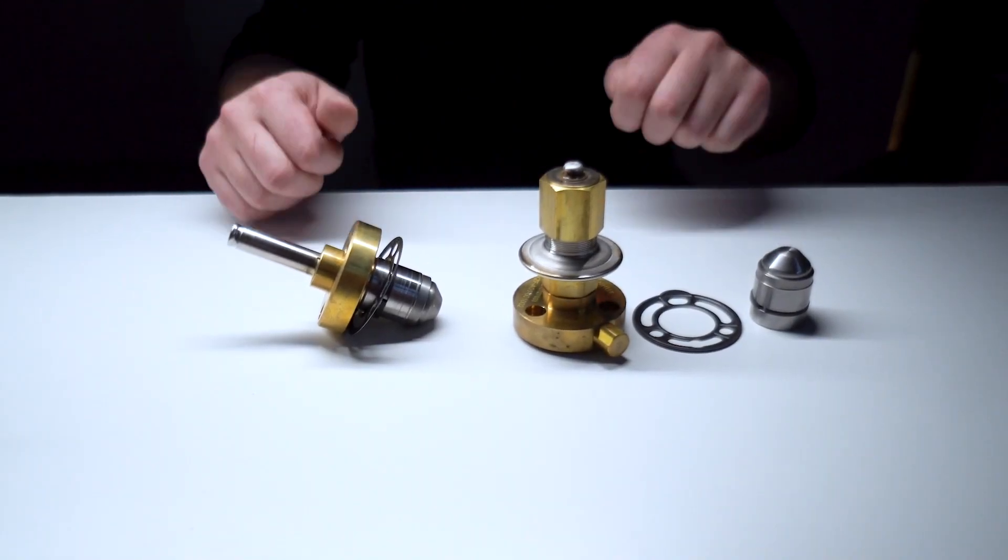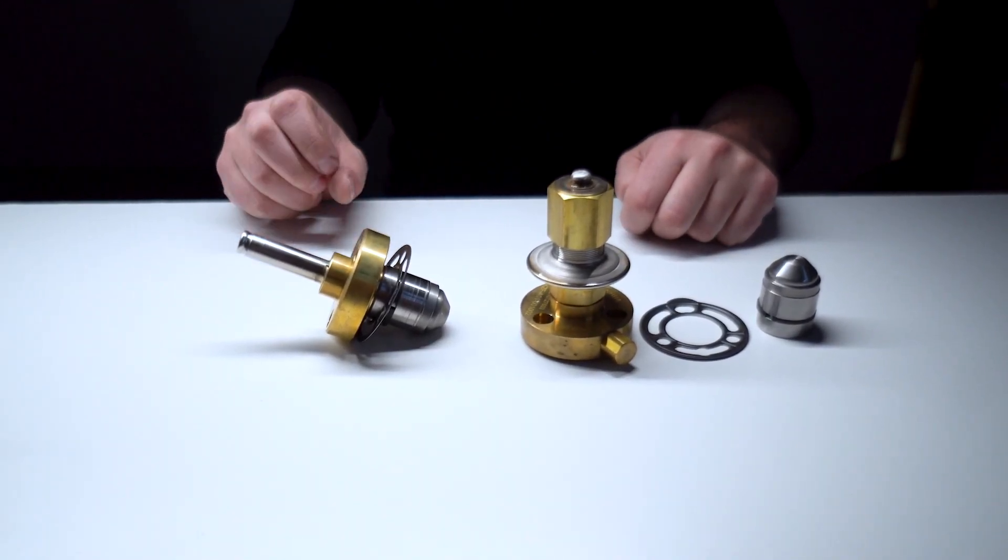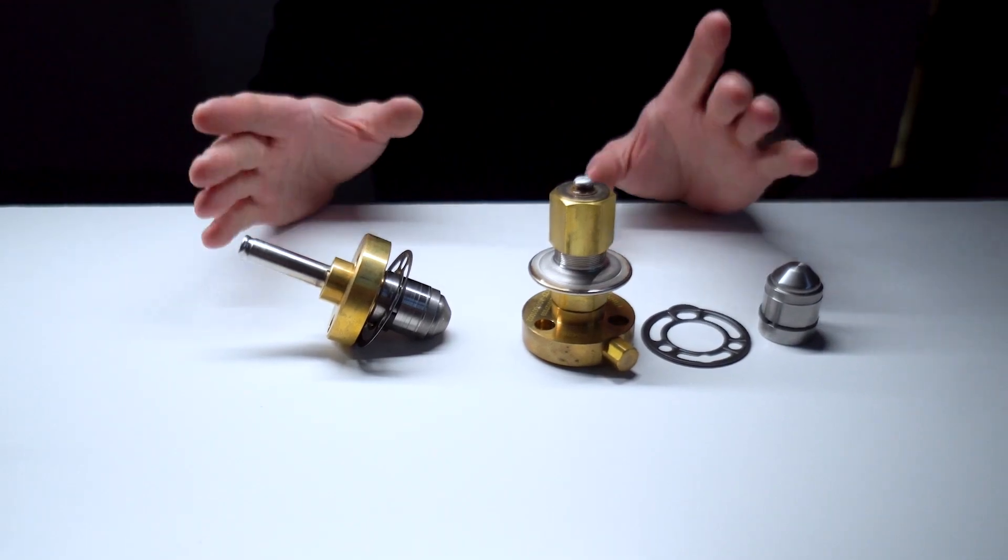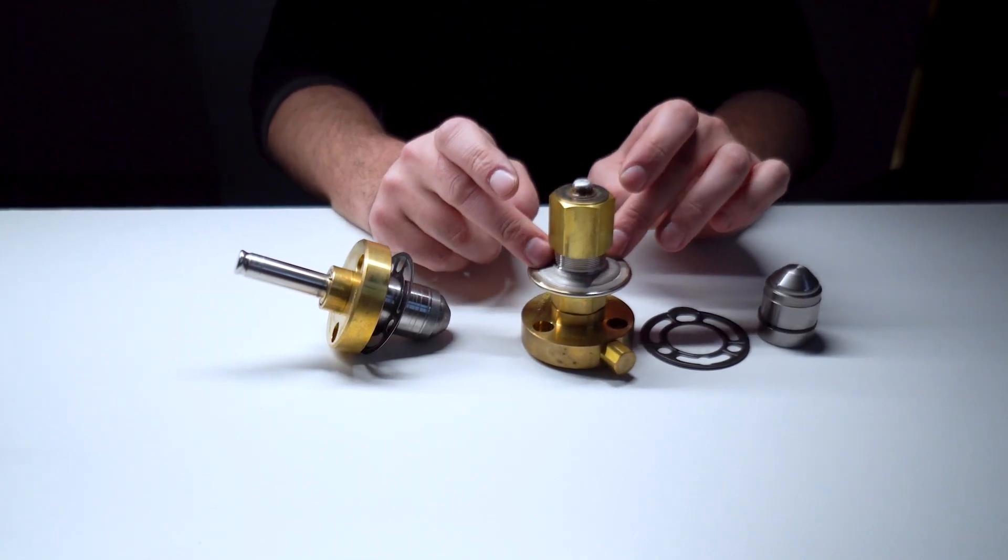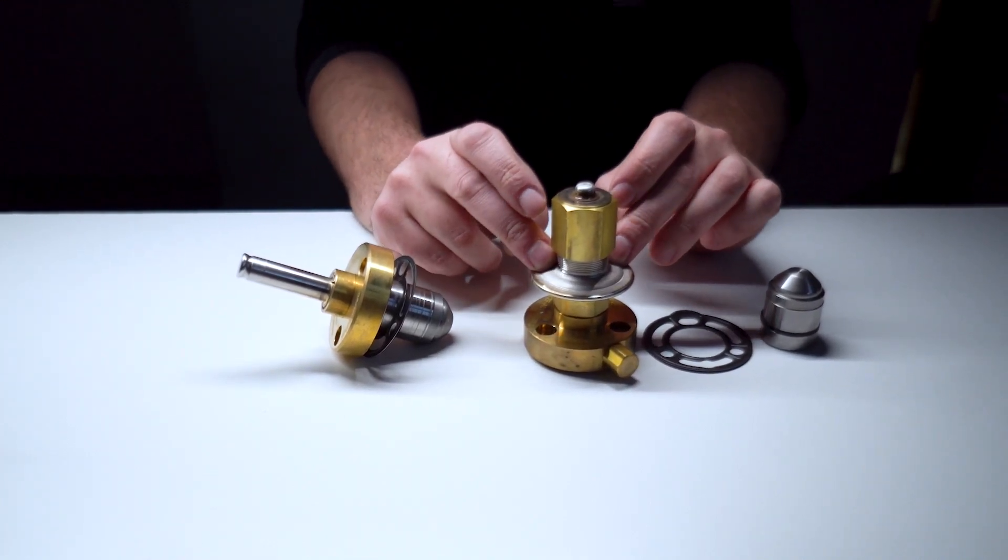Today we're going to do a short video on the capacity control valves that you could find on a carrier 06d or 06e compressor. Here you have an electric solenoid style unloader and this is the pressure style capacity control valve.